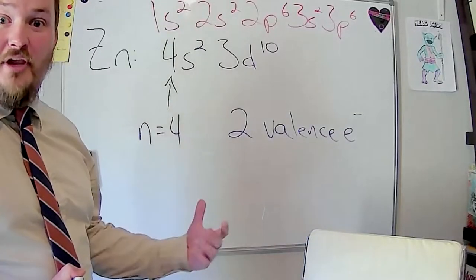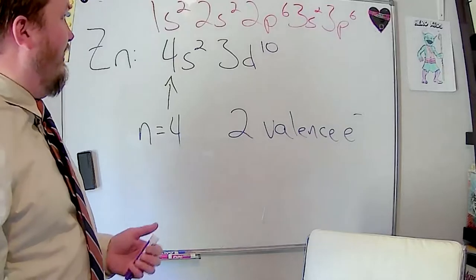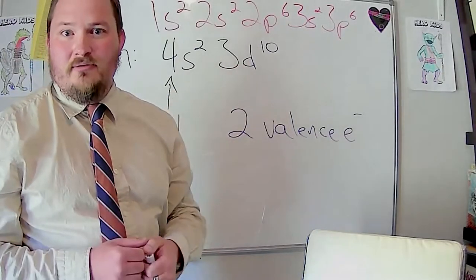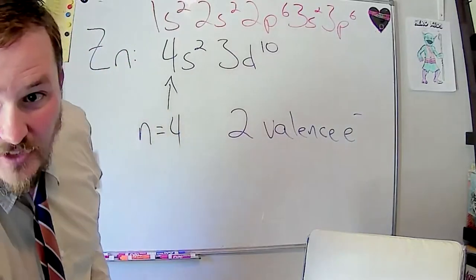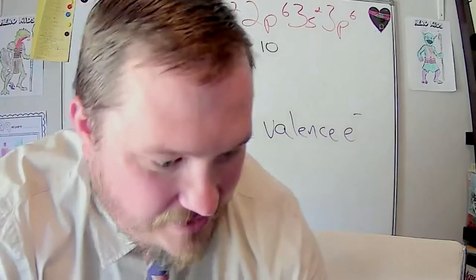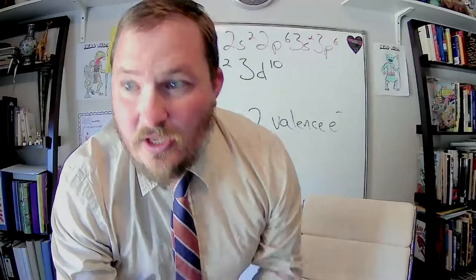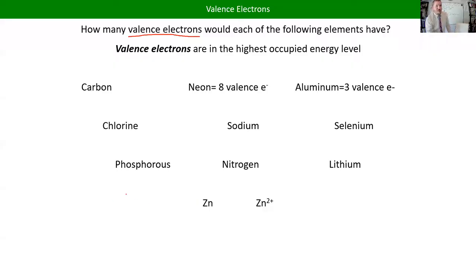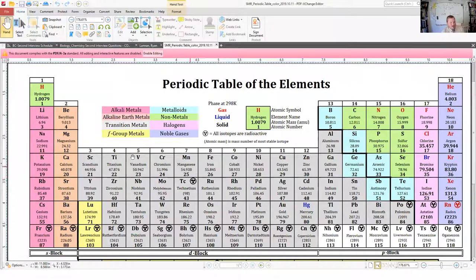The same applies for krypton and bromine — we can basically ignore the D block when counting valence electrons because they're off by a row. For the sake of this class, all transition metals in the D block are going to have two valence electrons. There are some exceptions to the way it fills up, but for this class, zinc, cadmium, mercury, silver, copper — they're all going to only have two valence electrons because that's the energy level we care about.